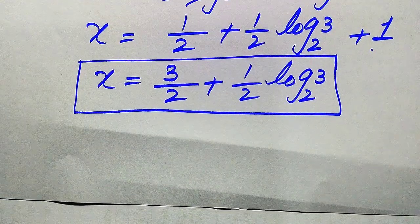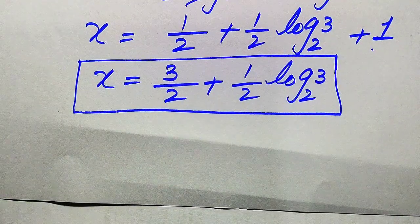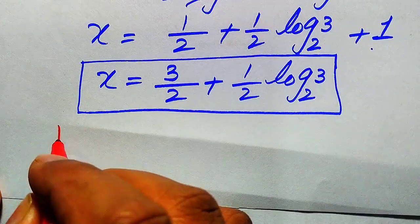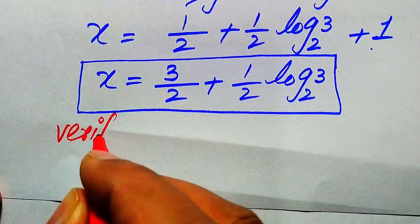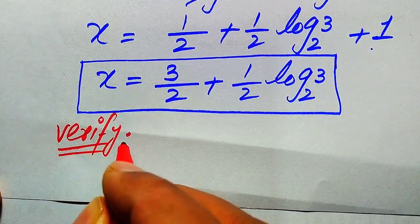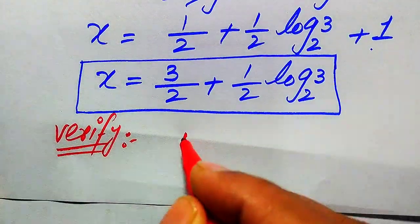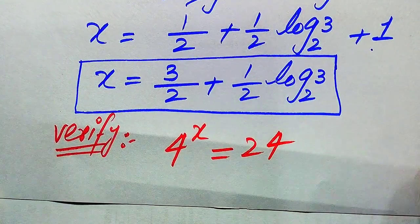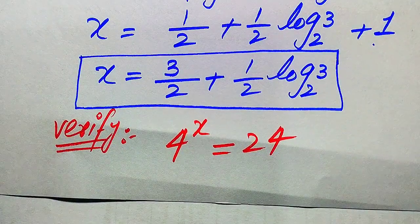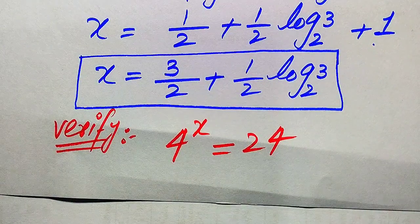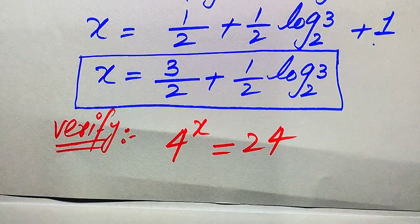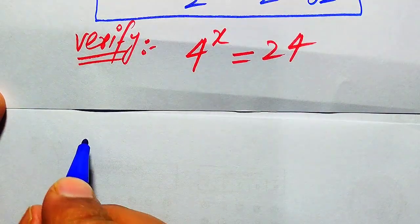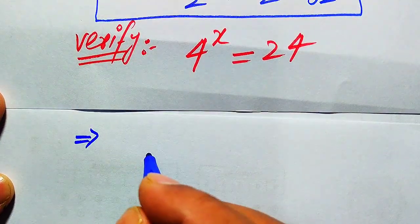This is the value of x. In the next step we verify whether this value of x is the solution or an extraneous root. For verification, we copy down the given equation: 4 to the power of x equals 24, and substitute the above value of x.